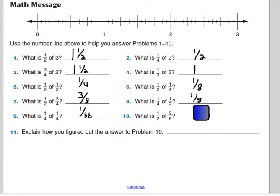Number nine, one fourth of one fourth, one sixteenth. And number ten, half of three eighths, will be three sixteenths.